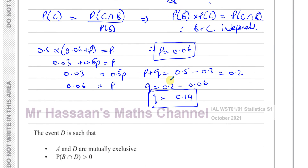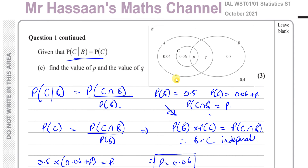That concludes question number one. Other questions from this S1 paper from October 2021 can be found in the link appearing at the end of this video. Other probability questions from S1 can be found in the playlist linked here. You can subscribe to my channel by clicking the link in the middle of the page. Thank you for watching and see you soon.